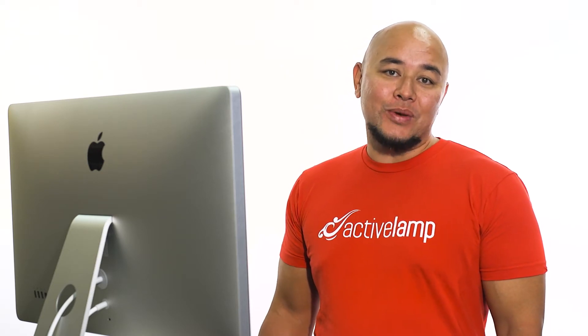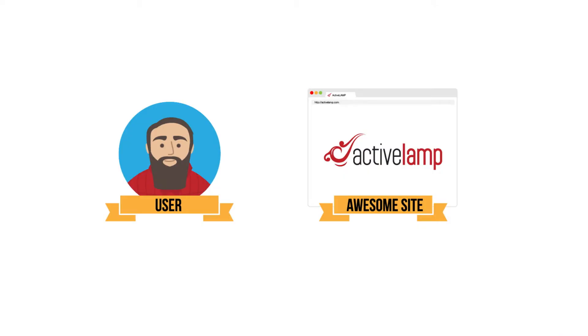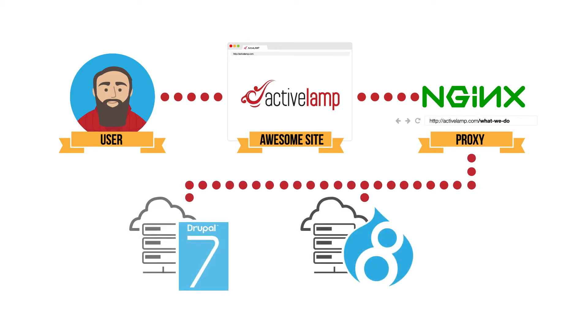So how are we doing this? The quick answer is we've got an Nginx server sitting in front of our two Drupal sites proxying traffic based on URL — it's either Drupal 7 or Drupal 8. Basically what is happening is the user makes a request to your website URL, which is pointed at our proxy server, the Nginx server, which has a list of rules of specific paths to push to Drupal 8, or otherwise push to Drupal 7.